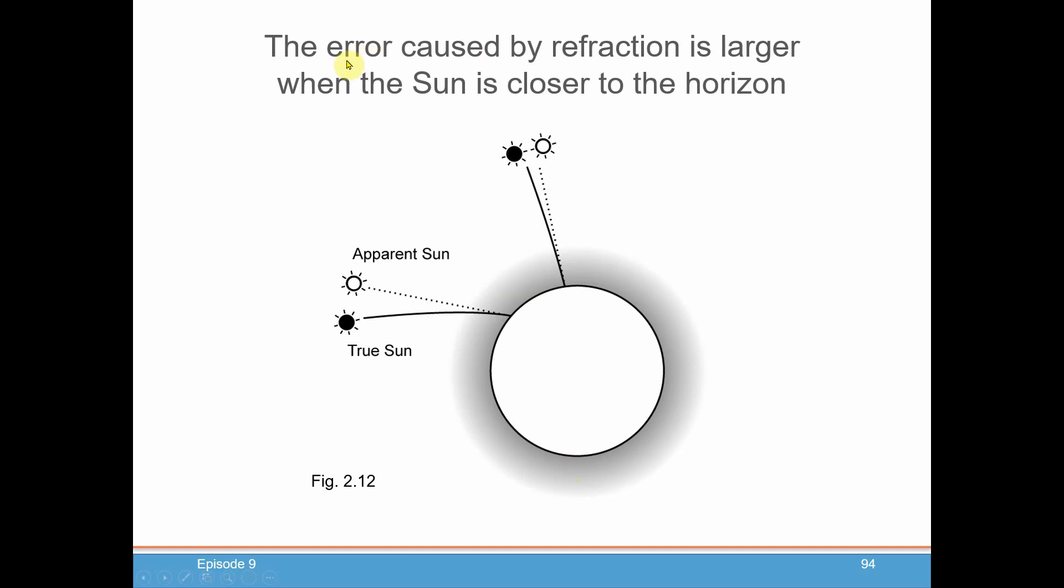And as you can see here, depending on where you're observing the sun, if it's lower down, you're going to get more of a refraction correction. Whereas if it's closer to being high up above, you're going to get very little of a refraction error. So the refraction error is going to depend on the angle at which you measure the sun in.